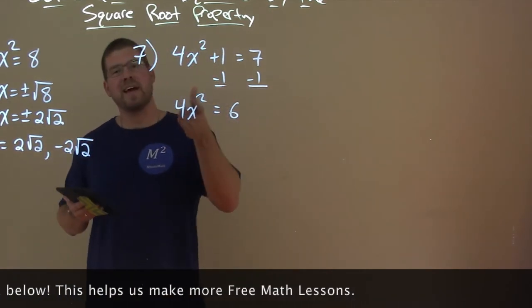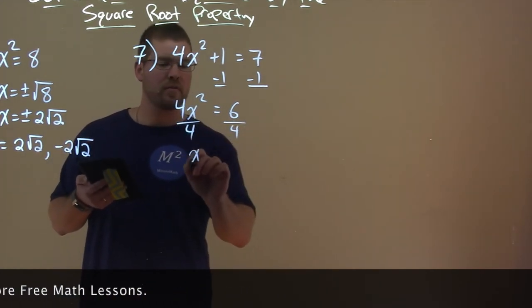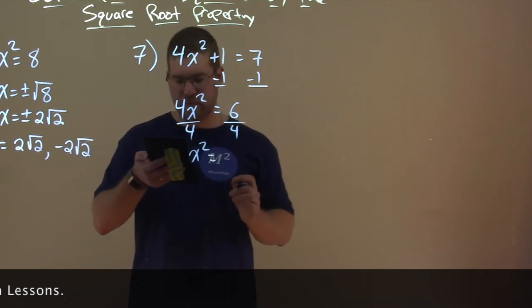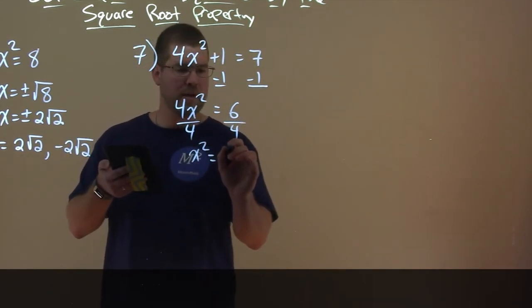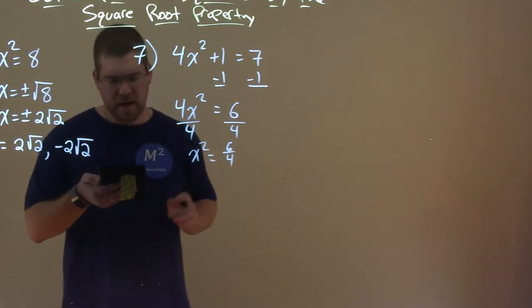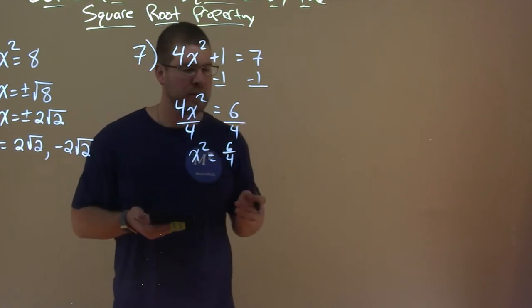We then still have to get x-squared by itself here. So we divide both sides by 4. And we have x-squared equals 6 divided by 4. So we have 6 over 4 here. Alright, now sometimes it's not necessarily you need to simplify right away. You'll see in a moment here,